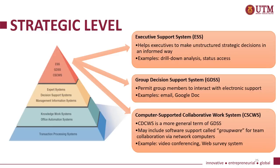At the strategic level, we have three main systems. The first is the executive support system, which helps executives make unstructured strategic decisions — for example, drill-down analysis and status access. The second is the group decision support system, which permits group members to interact with electronic support — for example, email and Google Docs. The third is the computer-supported collaborative work system, a more general term for group decision support, which may include groupware software for team collaboration via networked computers — for example, videoconferencing and web survey systems.